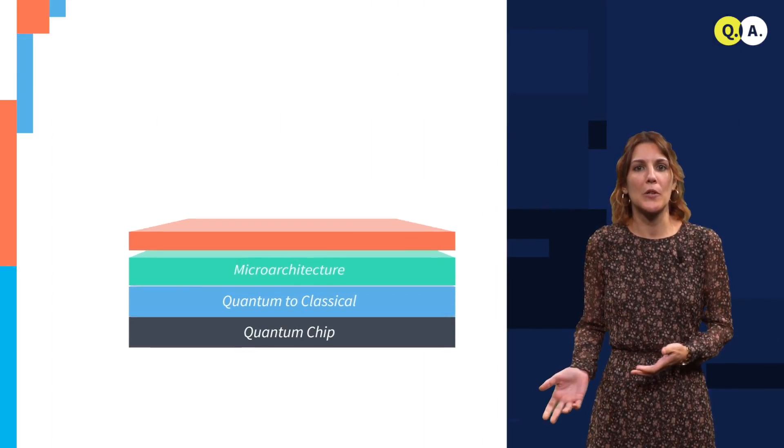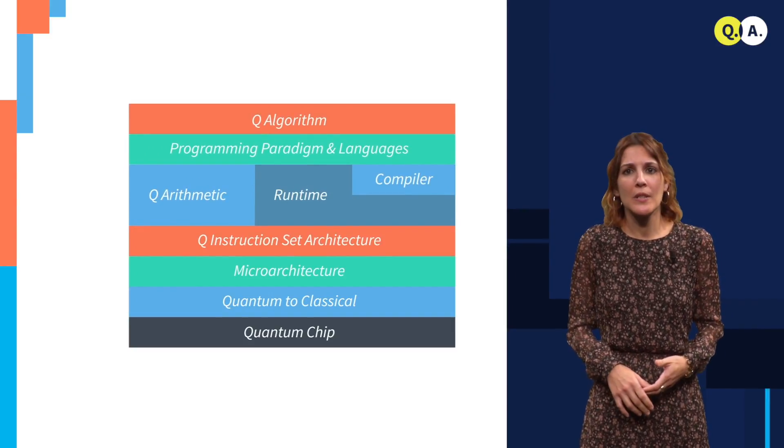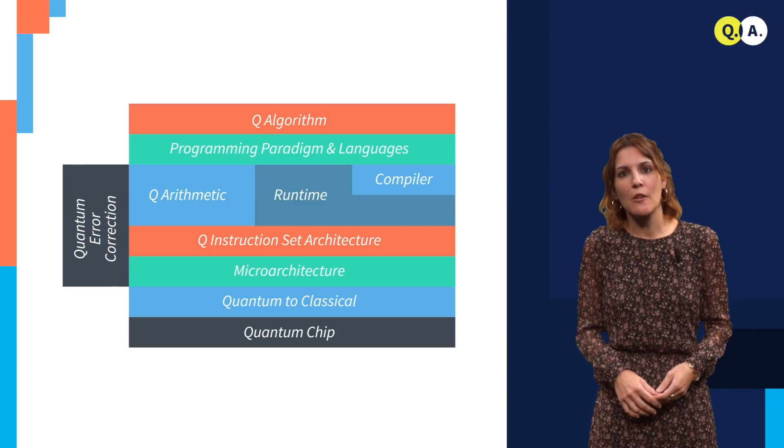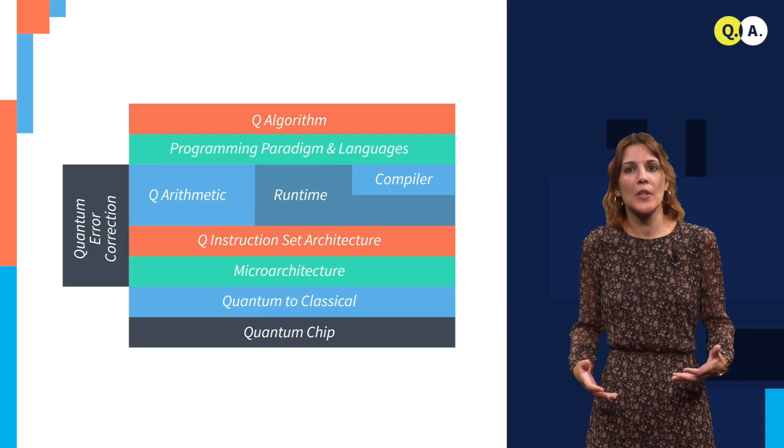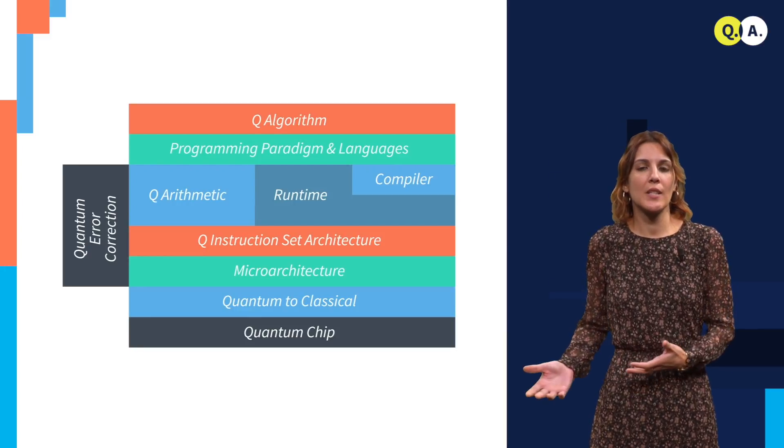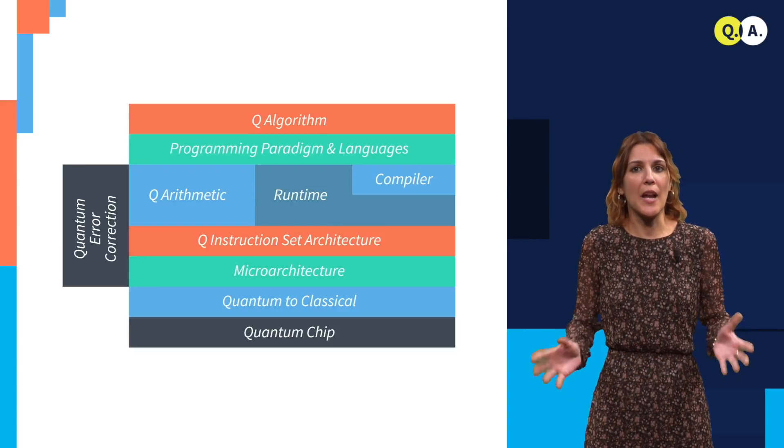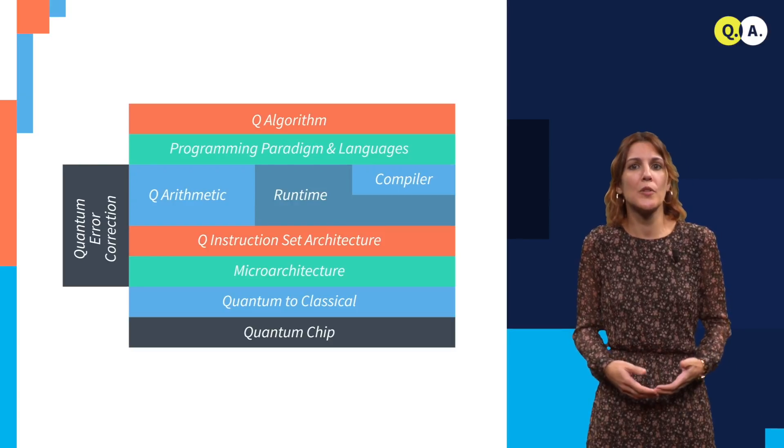In part one of this course, you have been introduced to the layers of a quantum computer by Koen Bertels. Although we commonly speak of the quantum computer, this term is actually a bit misleading. One could better speak of a quantum accelerator. When designing a quantum computer, we try to make use of the knowledge in classical computers. We are basically adopting the same kind of layer view of what a quantum accelerator or a quantum computer would be.